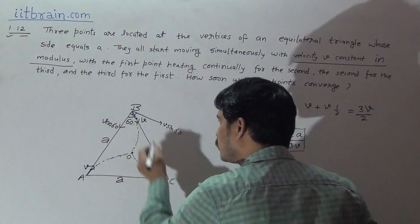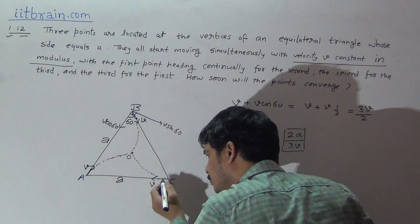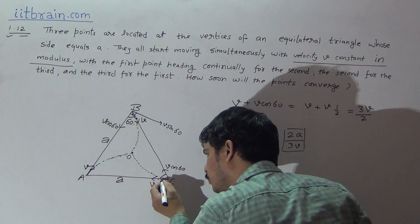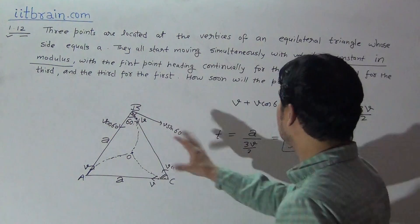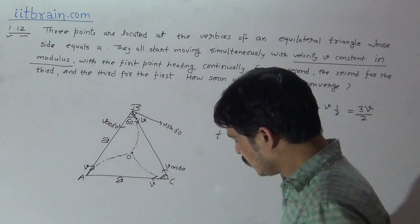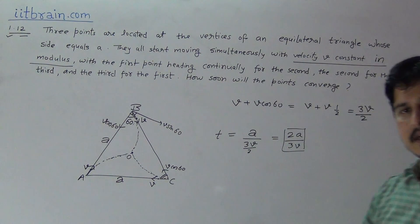B is coming towards C with V speed and C is going with velocity V cos 60 towards B, so in this track also the resultant velocity is 3V by 2. The time will be 2A by 3V. Thank you.